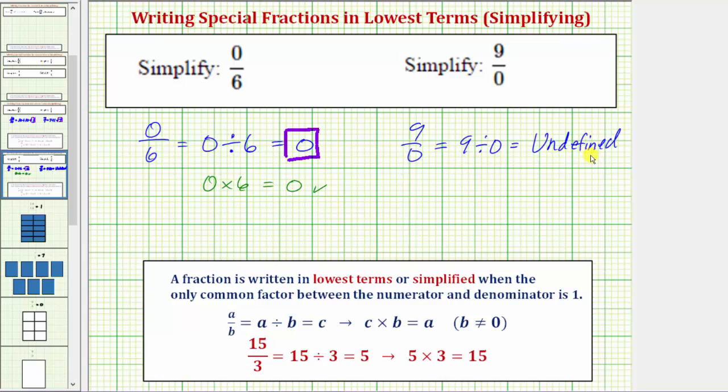If this was defined, the corresponding multiplication problem would be some number times zero equals nine. And because there is no number times zero that equals nine, this product does verify this quotient and the fraction are undefined.